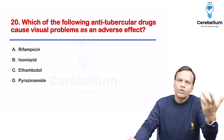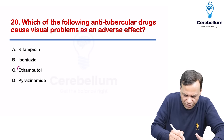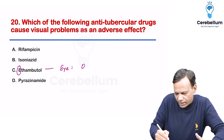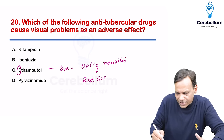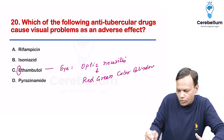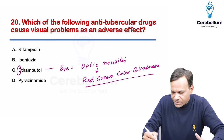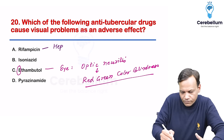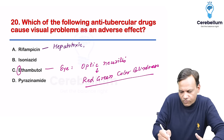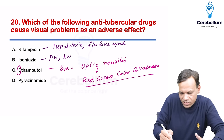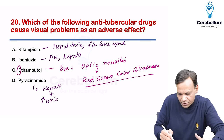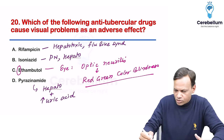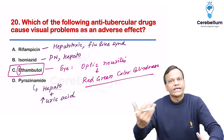Which antitubercular drug causes visual problems? E for ethambutol, E for eye problems — it causes optic neuritis leading to red-green color blindness. Other important side effects: rifampicin causes hepatotoxicity and flu-like syndrome; isoniazid causes peripheral neuropathy and hepatotoxicity; pyrazinamide causes hepatotoxicity and hyperuricemia. The answer is ethambutol.